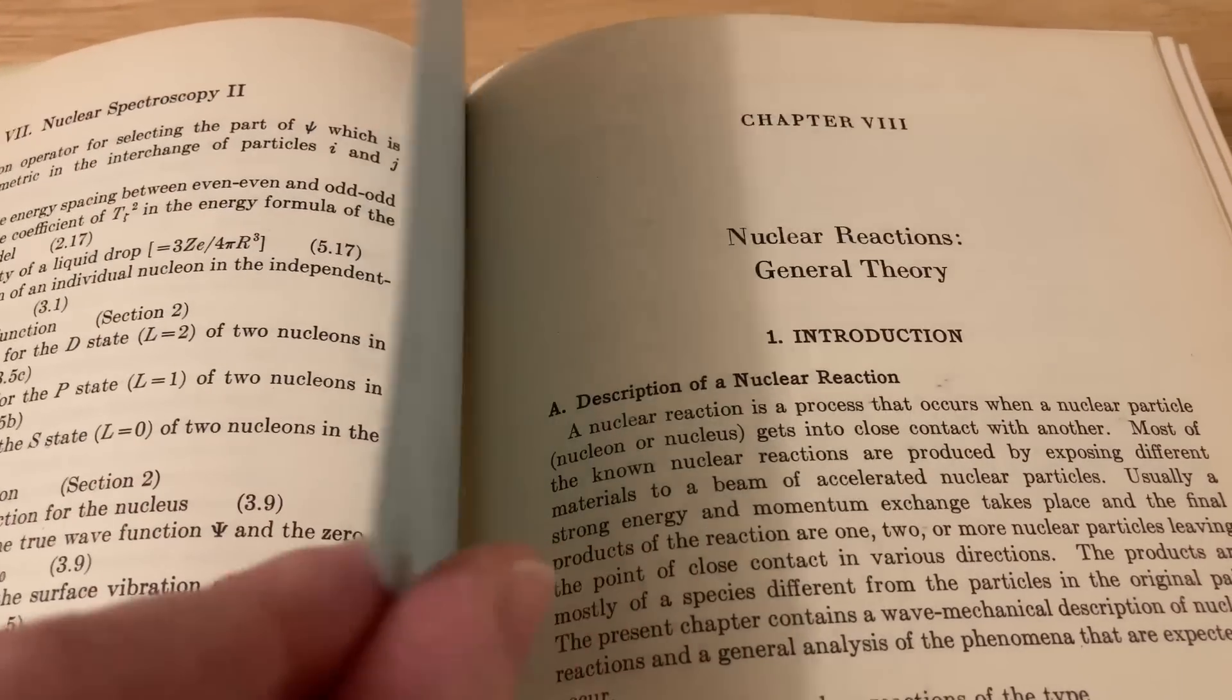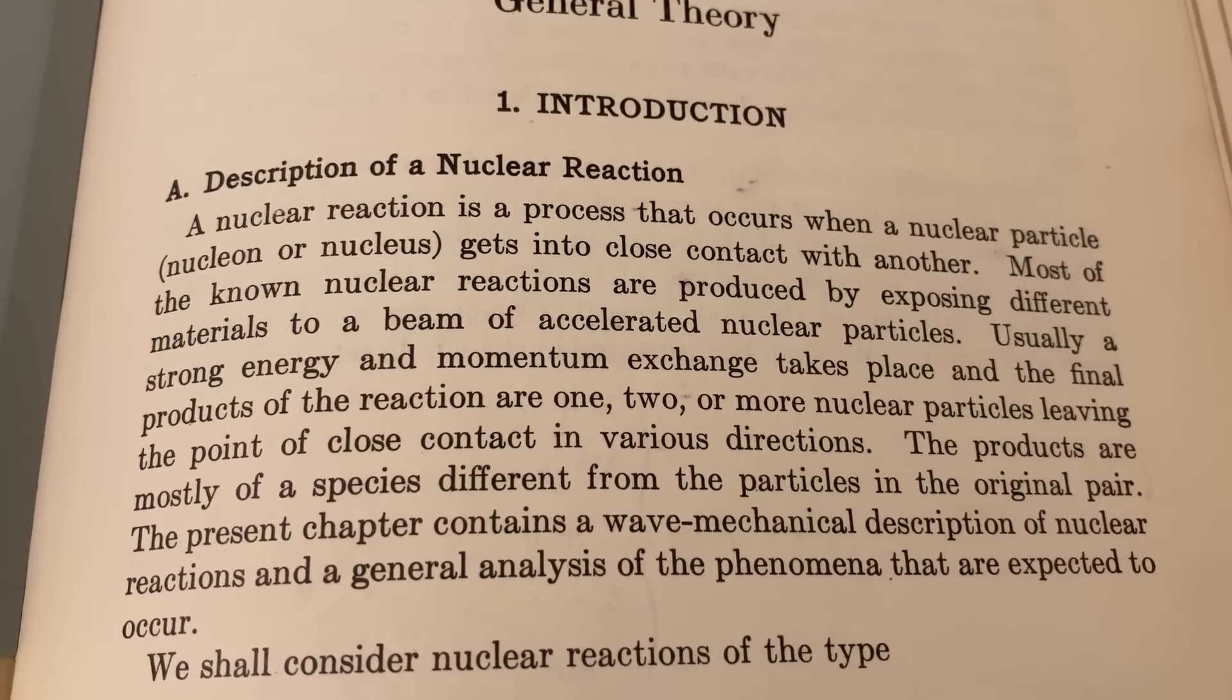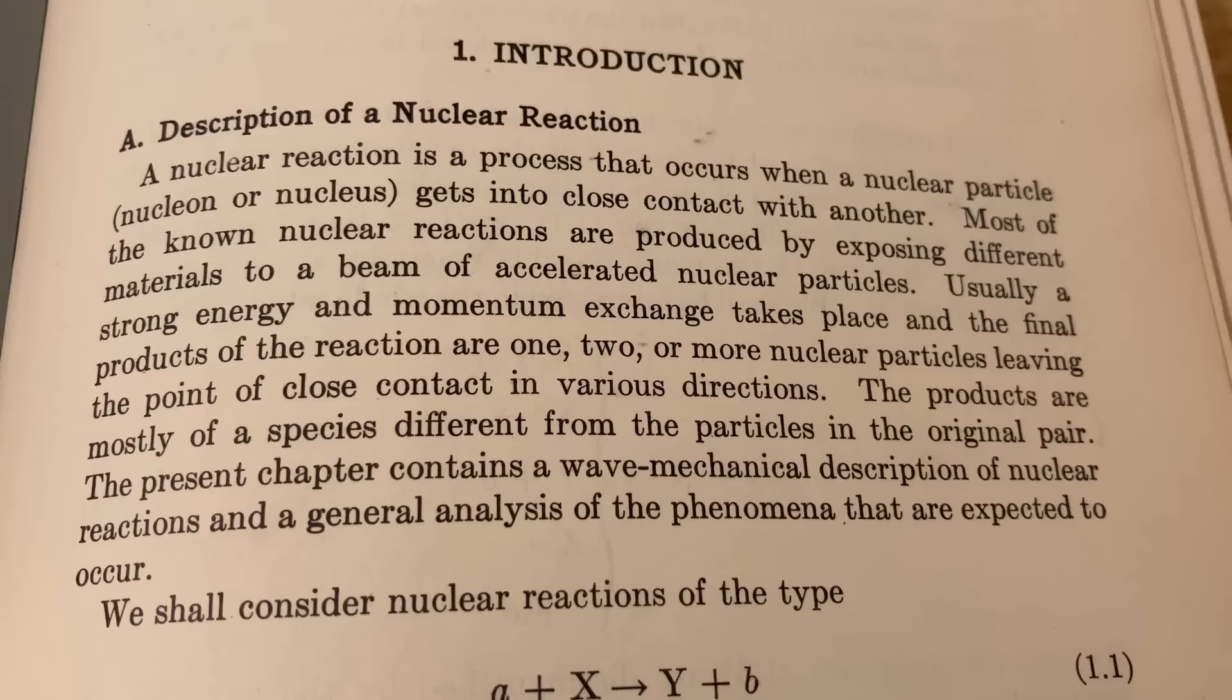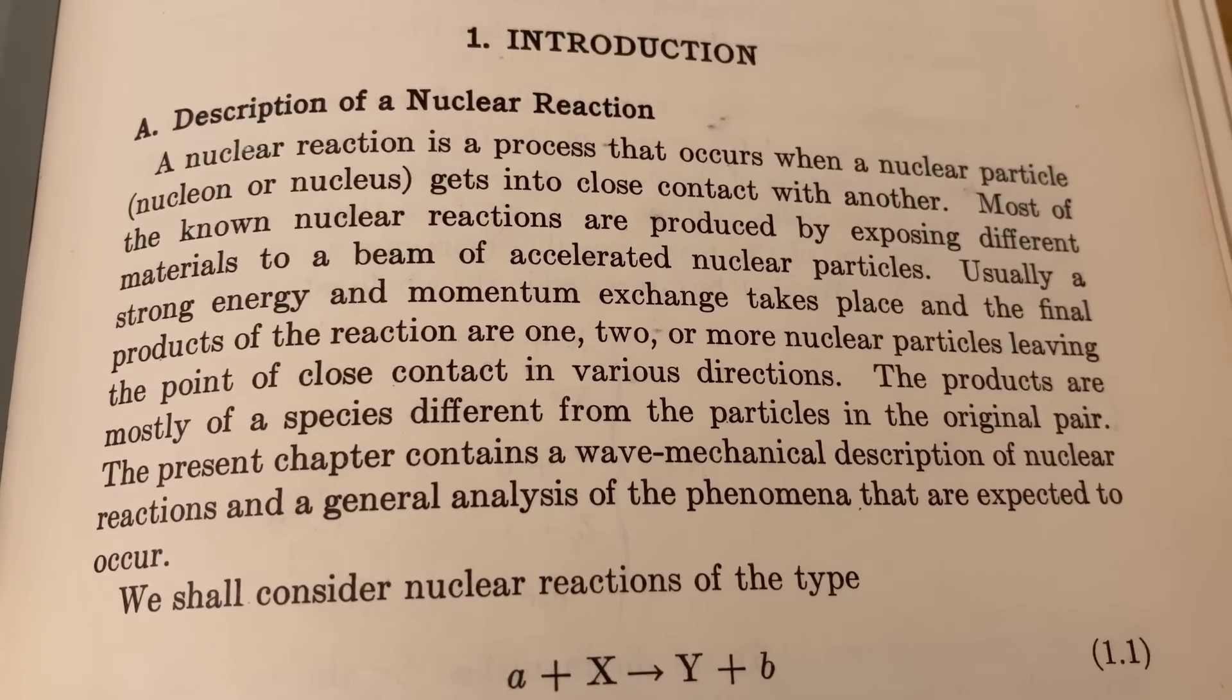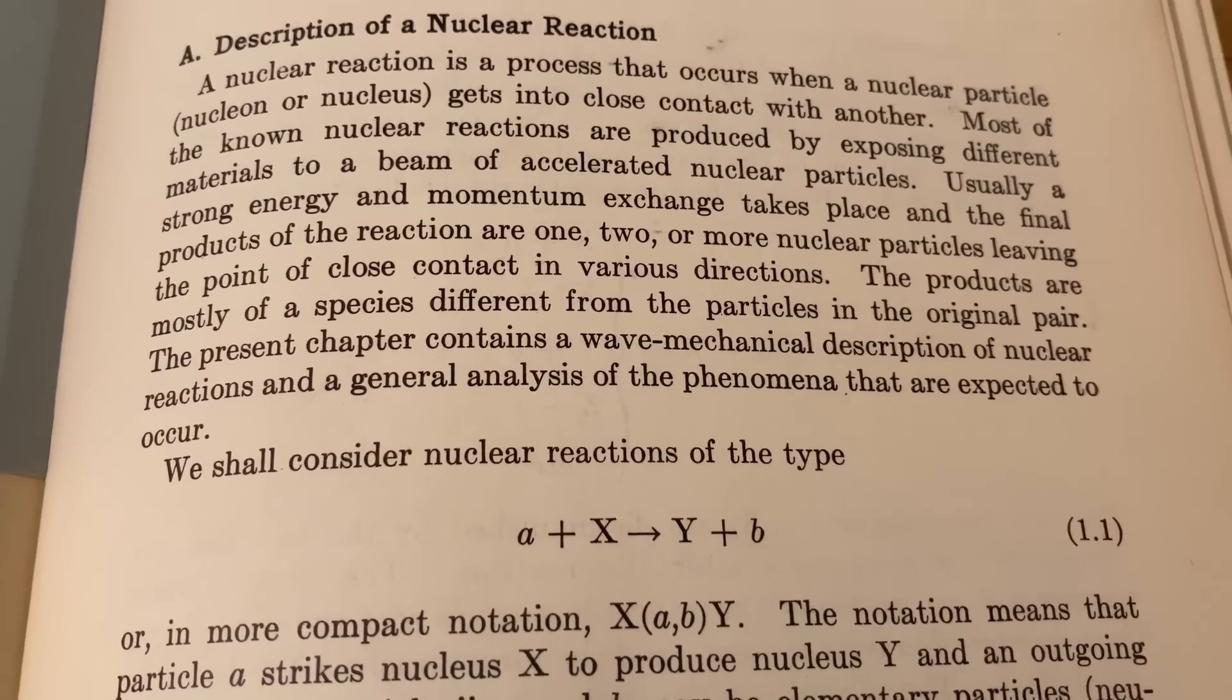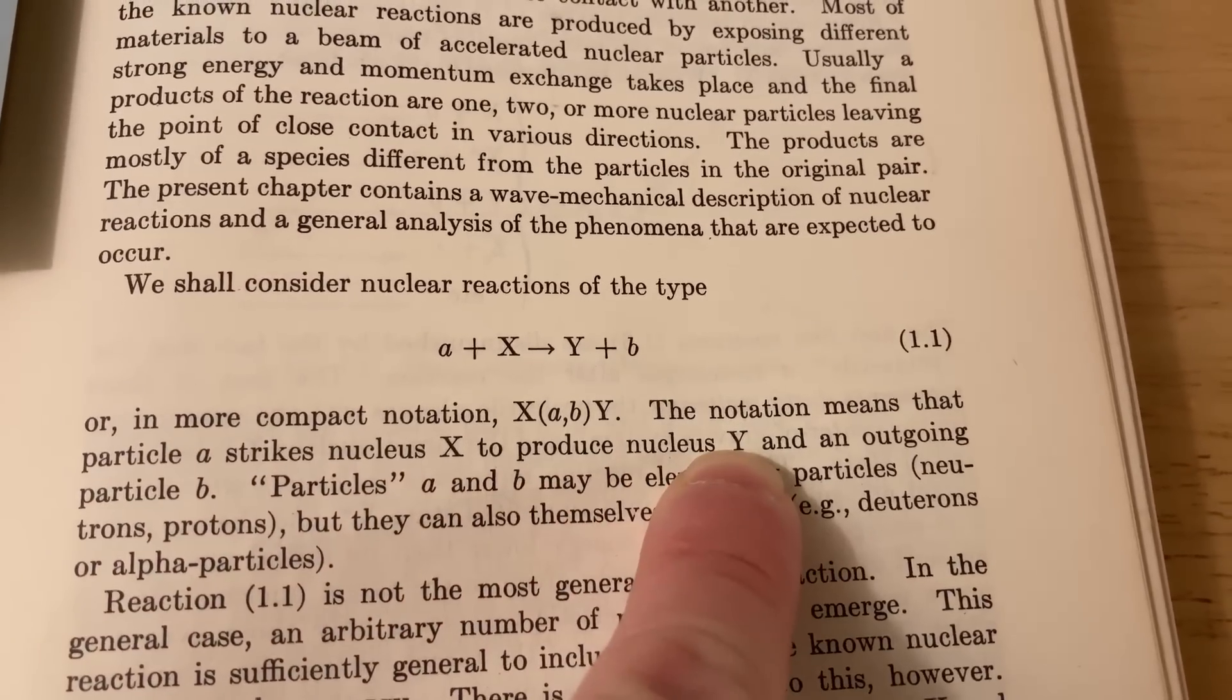This section here had like a little index card. So apparently, he was reading this. Nuclear reactions general theory. Description of a nuclear reaction. A nuclear reaction is a process that occurs when a nuclear particle, nucleon or nucleus, gets into close contact with another. Most of the known nuclear reactions are produced by exposing different materials to a beam of accelerated nuclear particles. Usually, a strong energy and momentum exchange takes place, and the final product of the reaction are one, two, or more nuclear particles, leaving the point of close contact in various directions. The notation means that a particle A strikes nucleus X to produce nucleus Y, and then outgoing particle B.